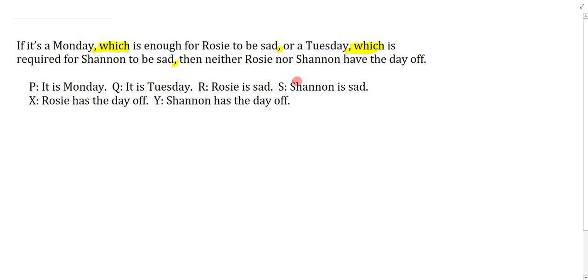I'm going to ignore a lot of the sentence and focus on the first clause: which is enough for Rosie to be sad. What does is enough mean? Is enough is a stylistic variant for saying is sufficient. So the sufficient condition is the Monday and the sufficient condition is really the antecedent. So this says if it's Monday then Rosie is sad, and this entire thing should be marked off by a conjunction.